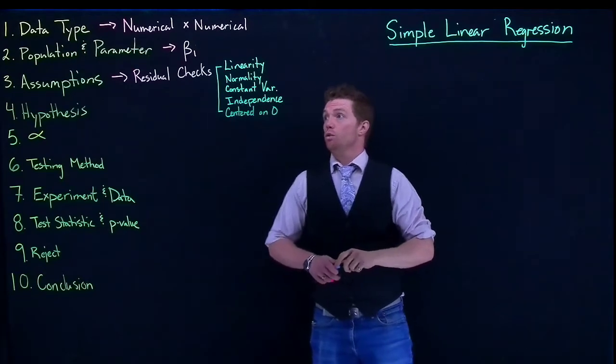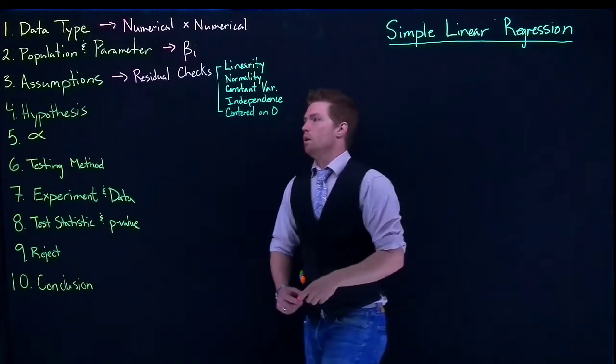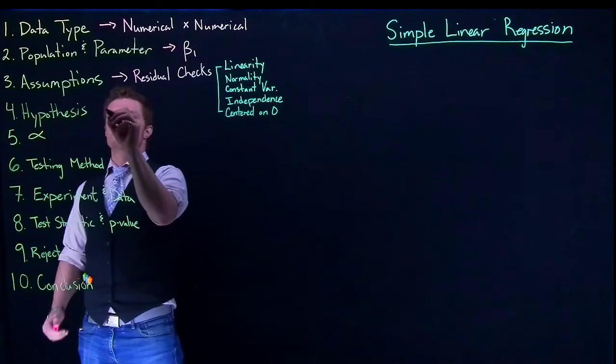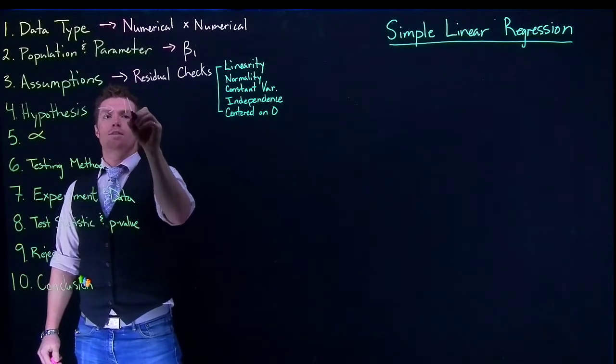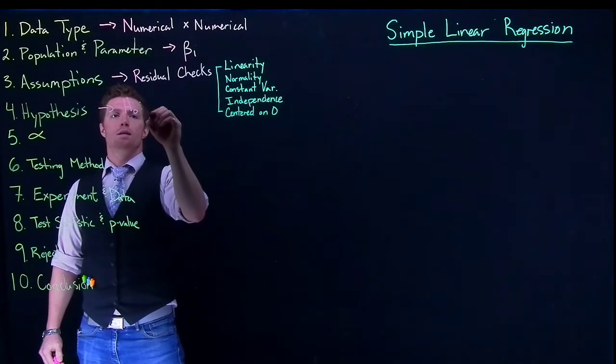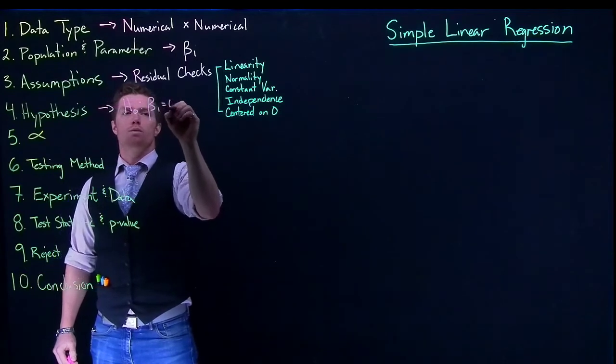So those were the checks that we were supposed to do. Next for our hypothesis, the null hypothesis that we set up is that beta 1 equals zero.